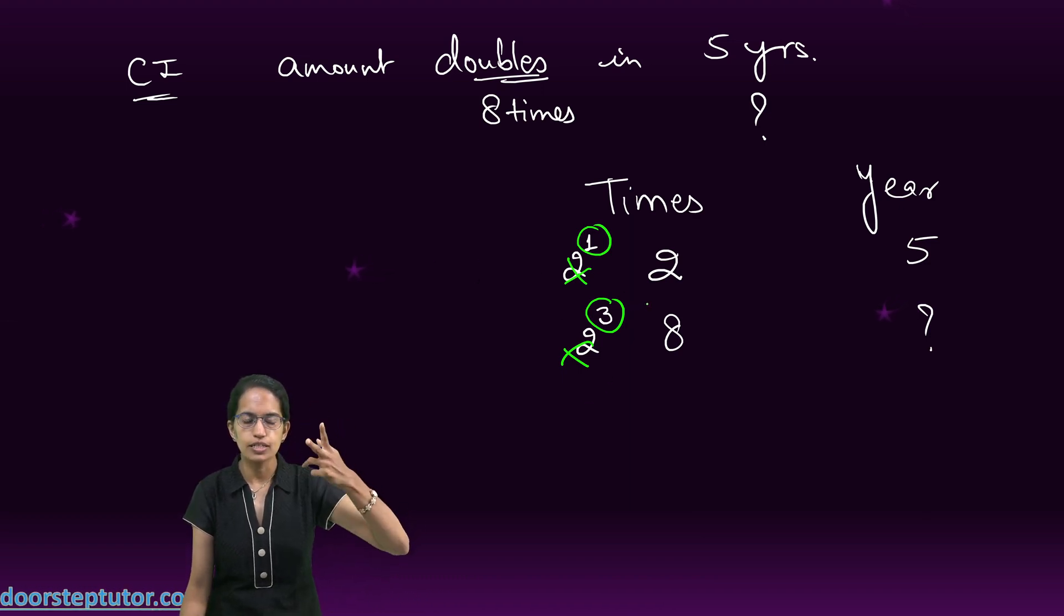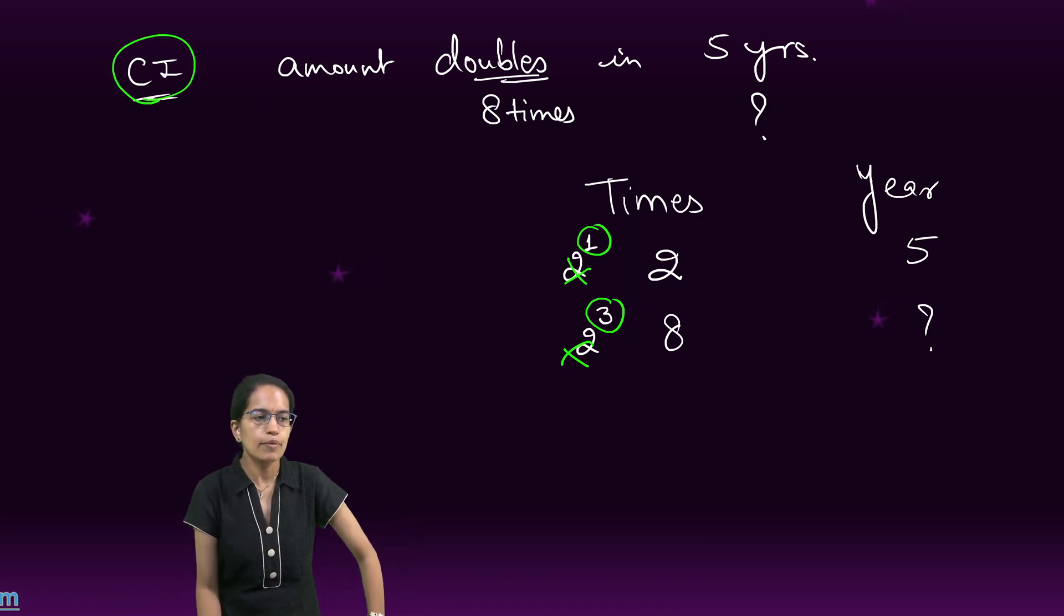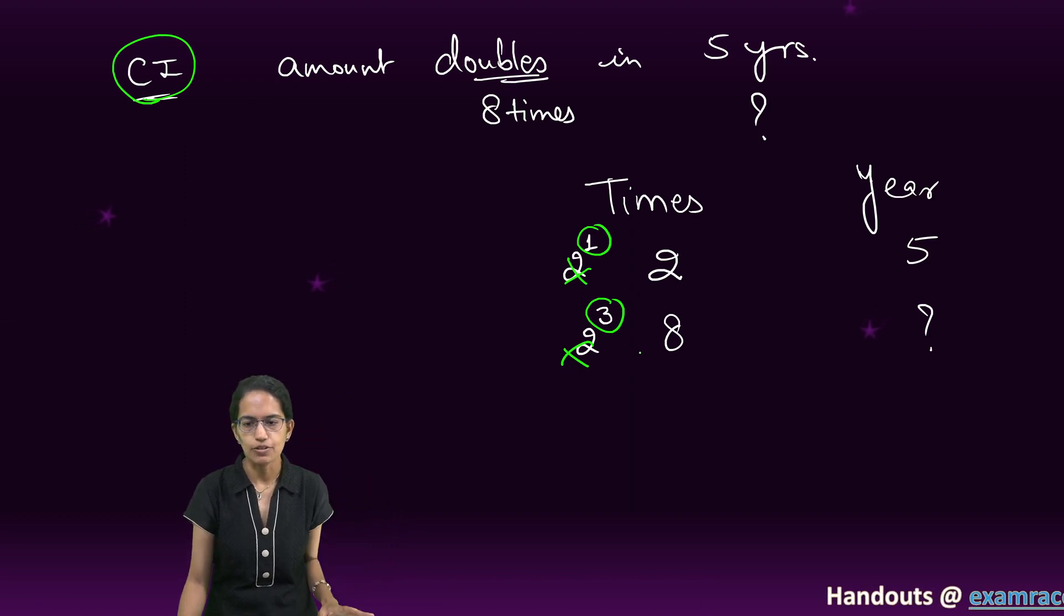Why did we convert into the exponents? Because the same happens with the compound interest formula. That's the basic thing that you need to remember.